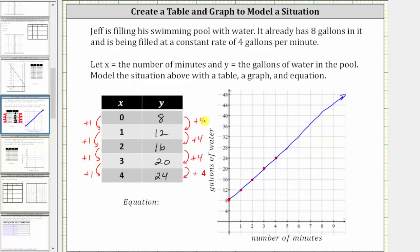This gives a constant rate of positive four divided by positive one, which is positive four, meaning a rate of four gallons per minute.